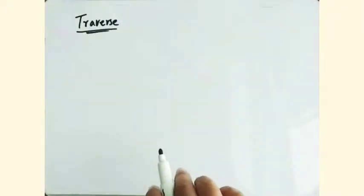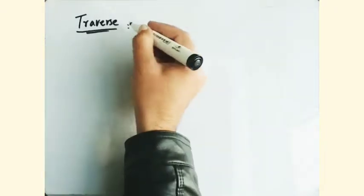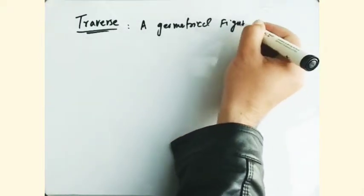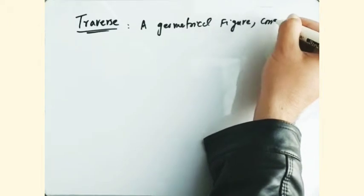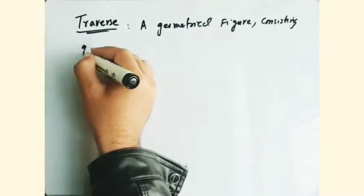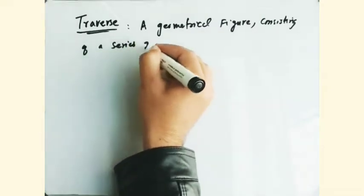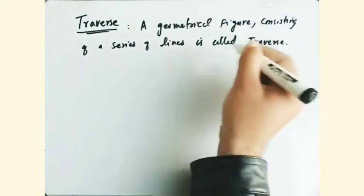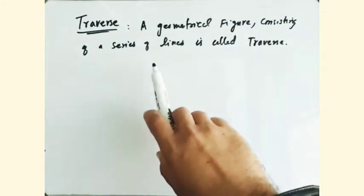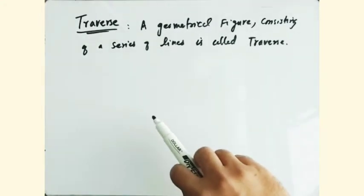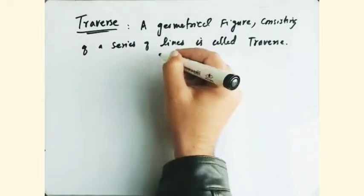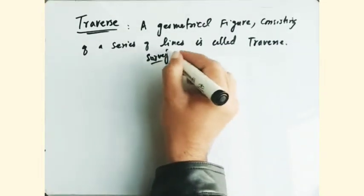Hello guys, today I'm going to discuss a Traverse. A Traverse is defined as a geometrical figure consisting of a series of survey lines. This is called a Traverse.